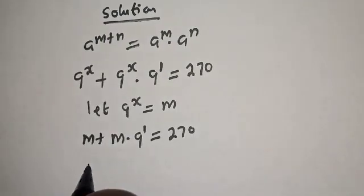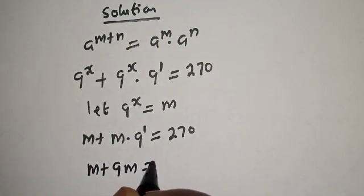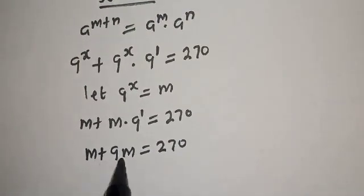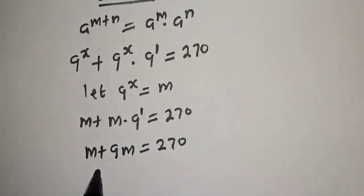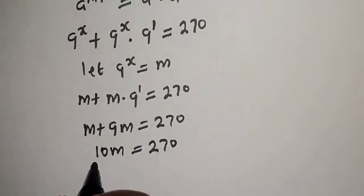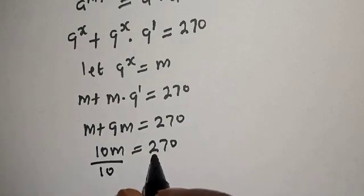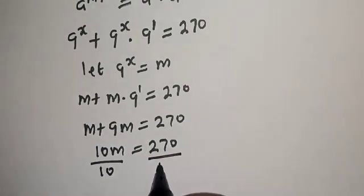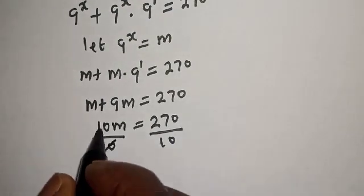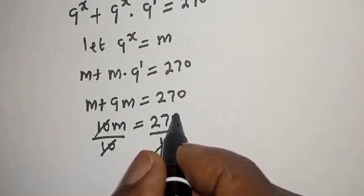This gives m plus 9m is equal to 270. Now m plus 9m is 10m, equal to 270. Let's divide both sides by 10. This will cancel, giving us m is equal to 27.